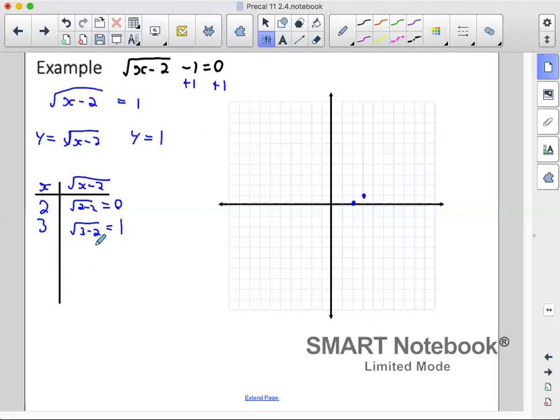The number that would give me a 4 in here would be 6 because if I have square root of 6 minus 2, that's square root of 4, which gives me 2. So at 6, I'm at 2. And my graph will look like that.